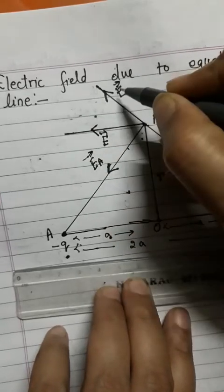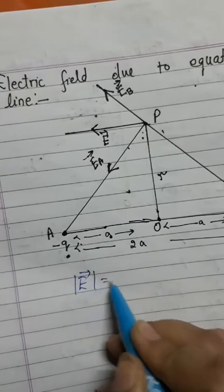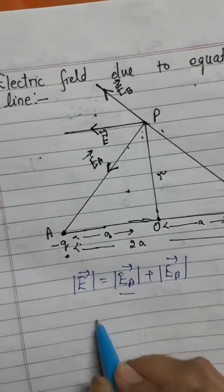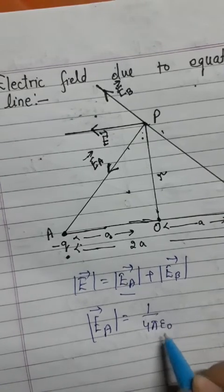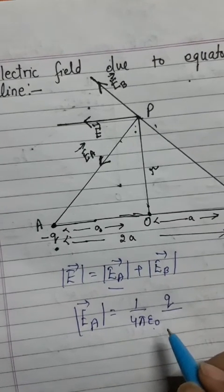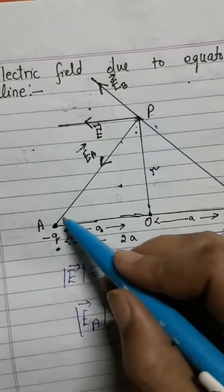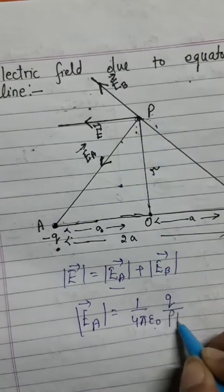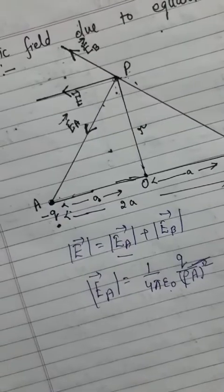The resultant electric field E equals EA vector plus EB vector. Now find the value of EA. The magnitude of EA equals 1 upon 4 pi epsilon times q upon R square, where R square is the distance from the observation point. The distance between observation point P and charge point A is PA square, found using Pythagoras' theorem.